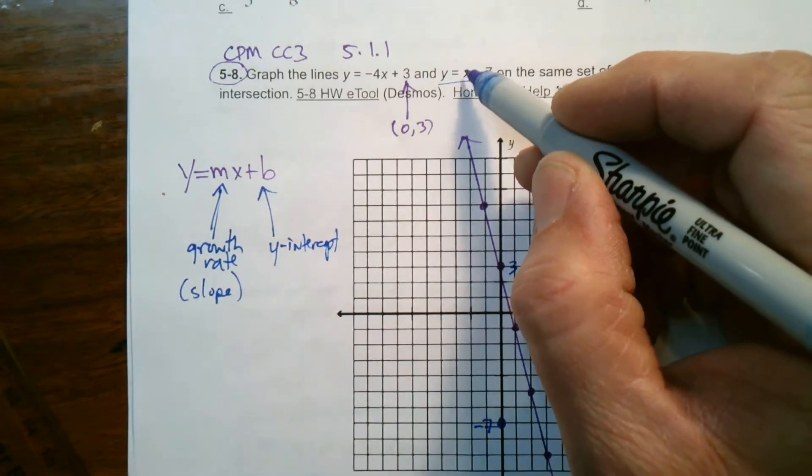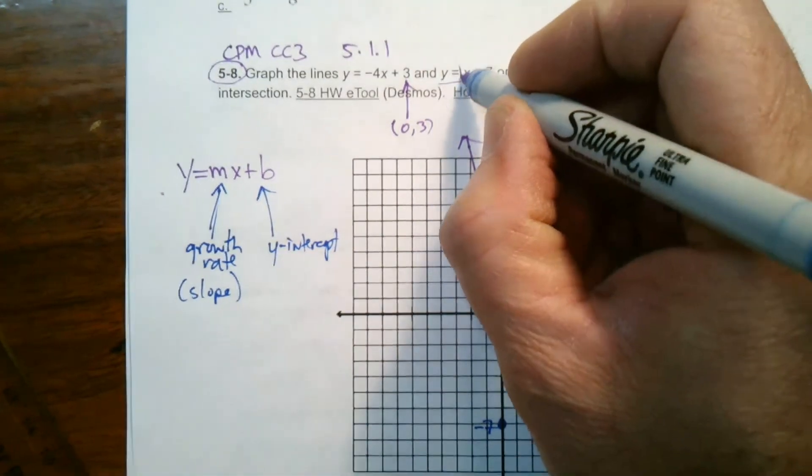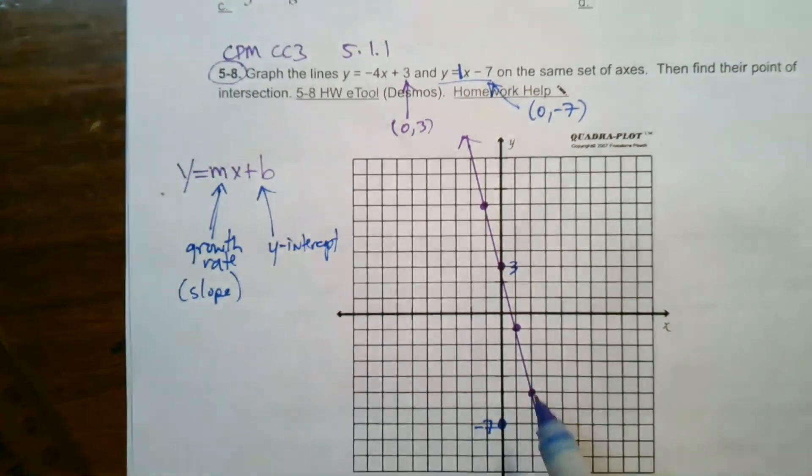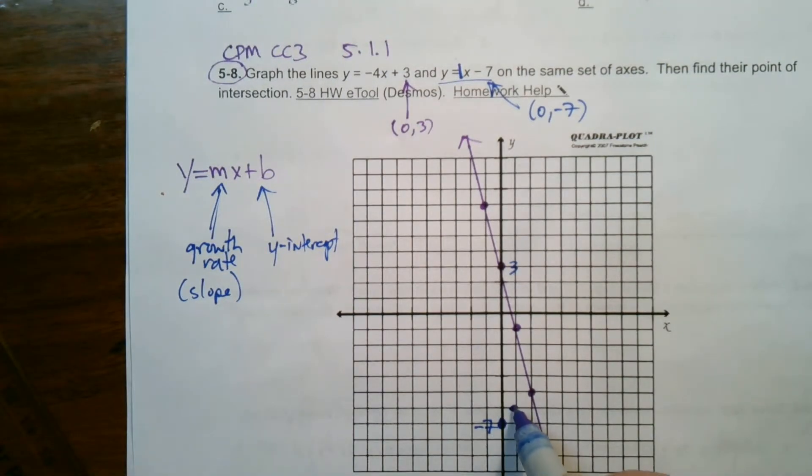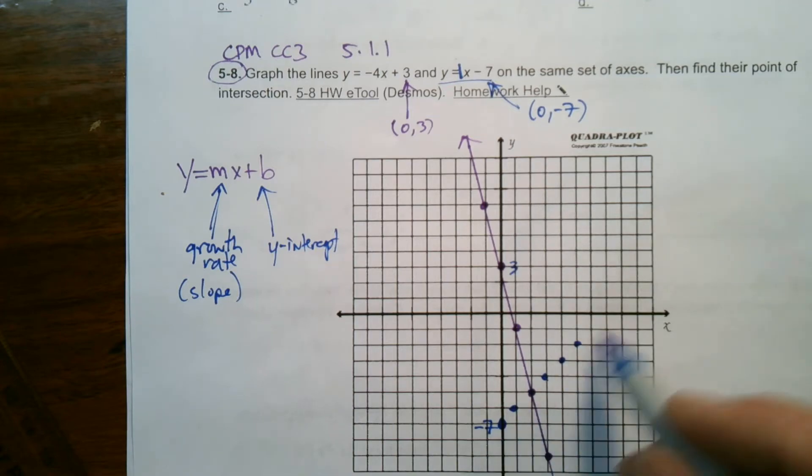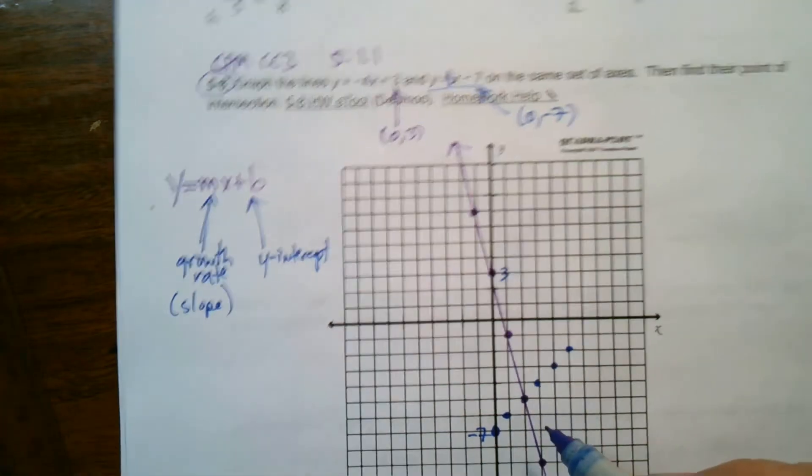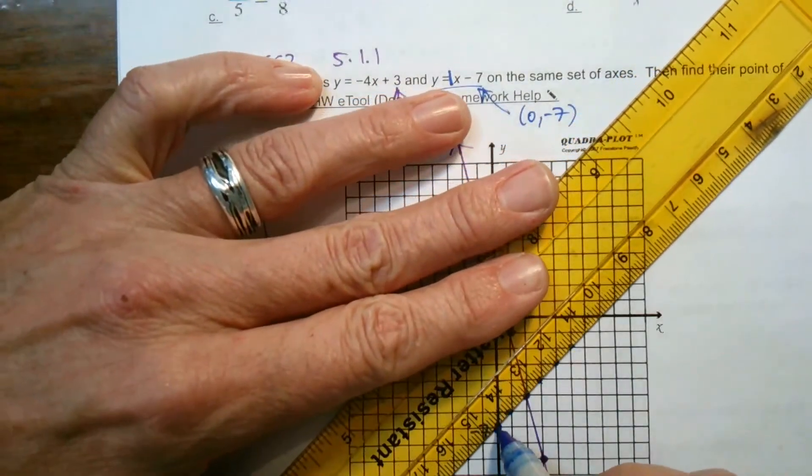So, here we have now my growth. Well, remember that if there's no number in front of the x, there's always a coefficient of 1. So, my growth is 1. Every time I go over 1, I go up 1. Over 1, up 1. Over 1, up 1. This is the growth rate or the slope of the line.